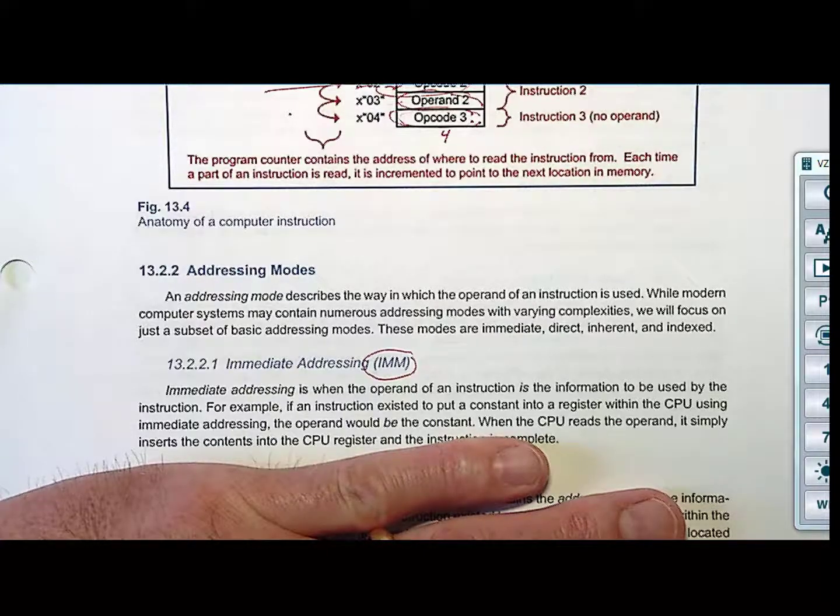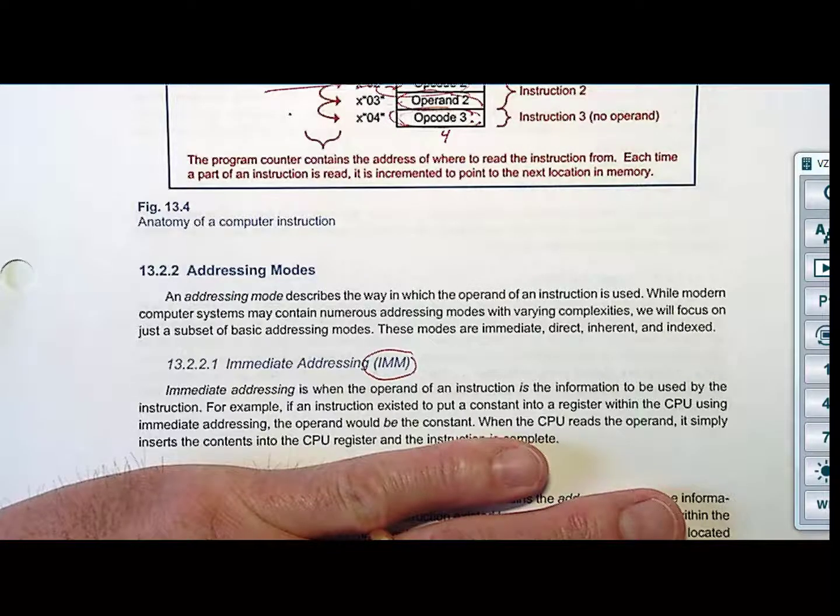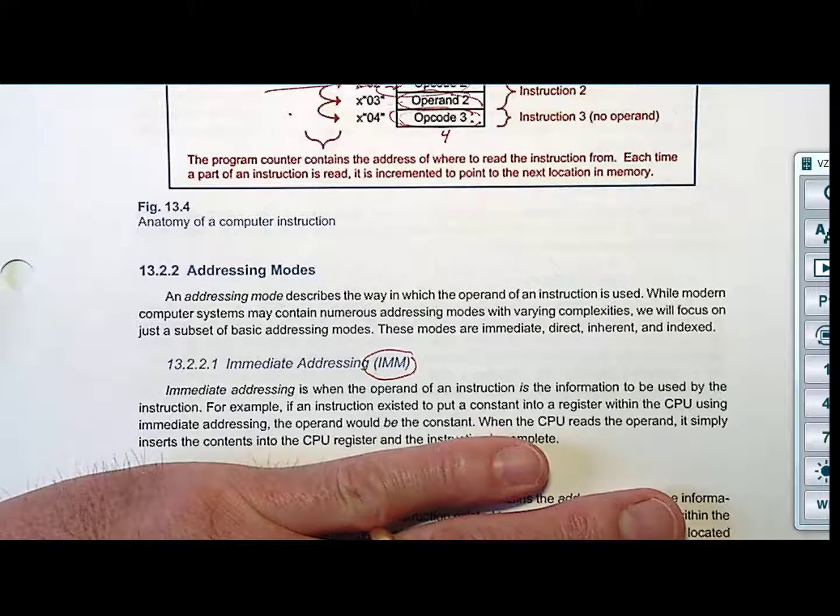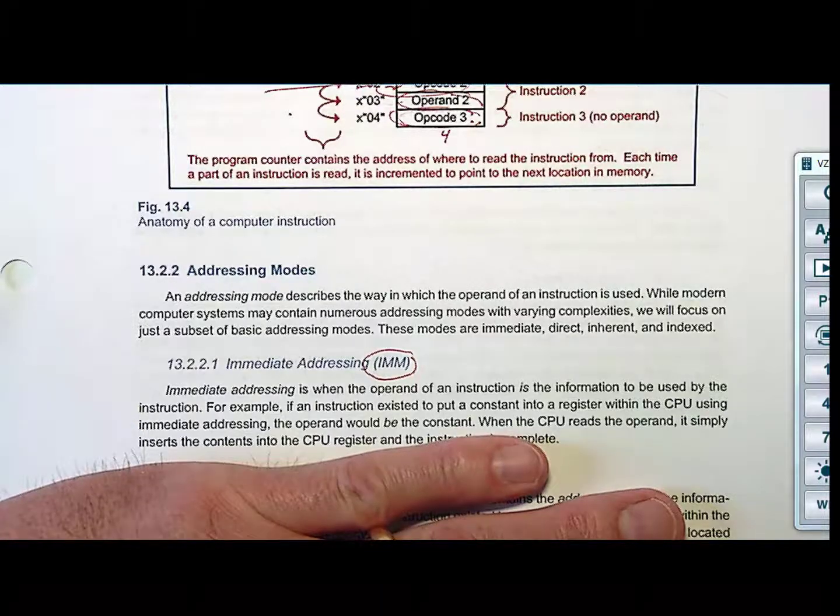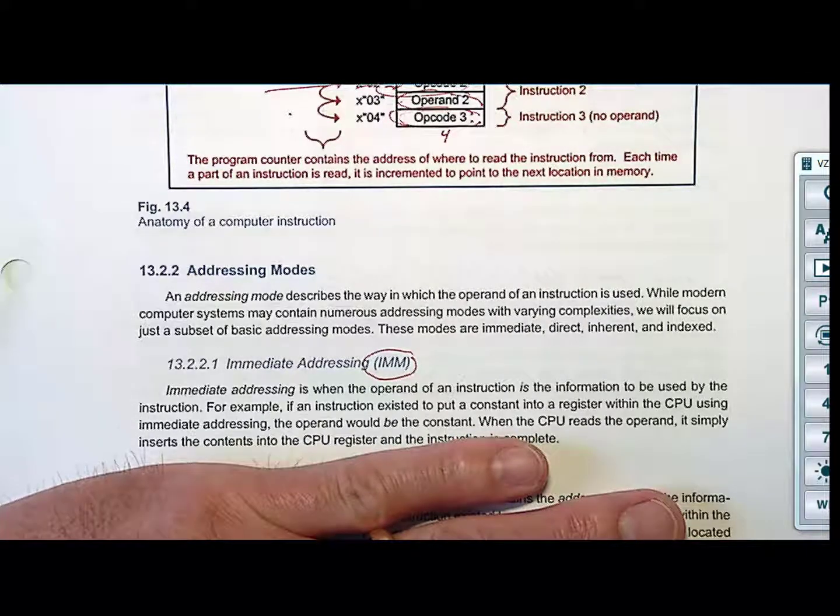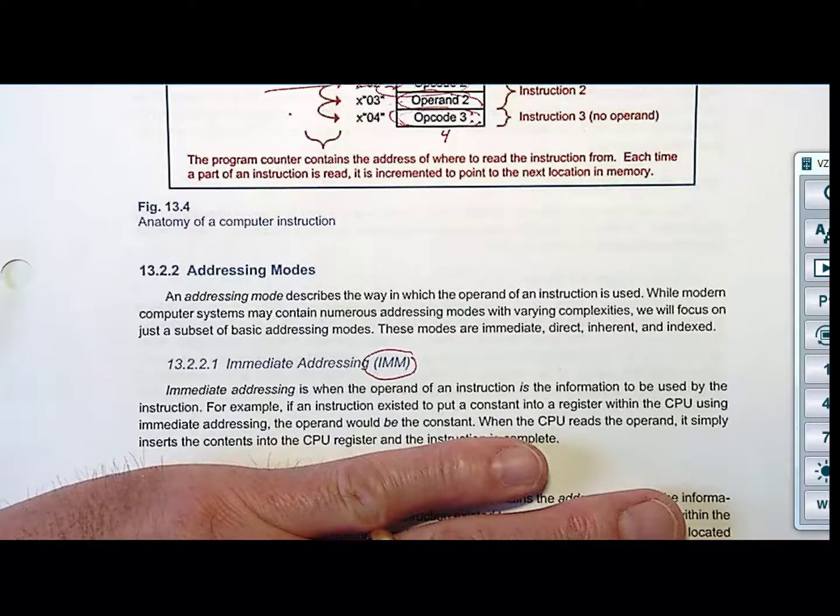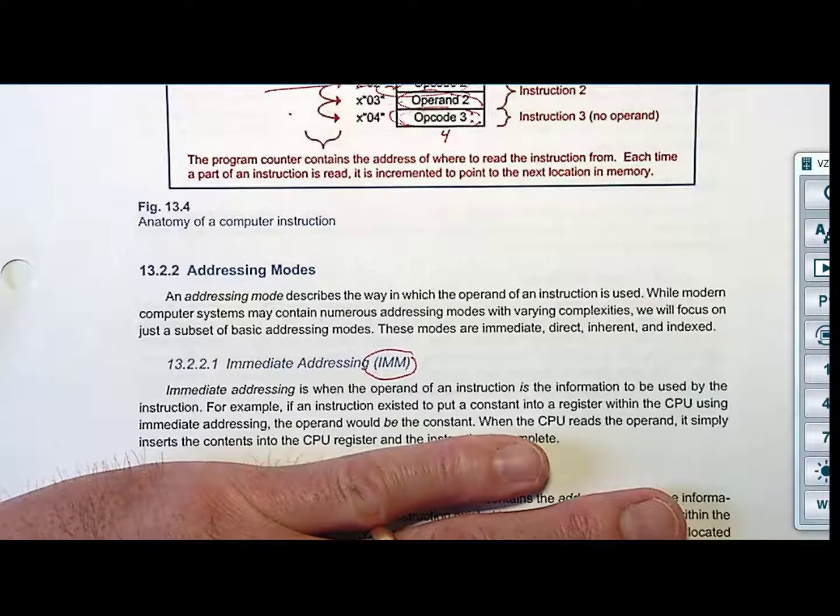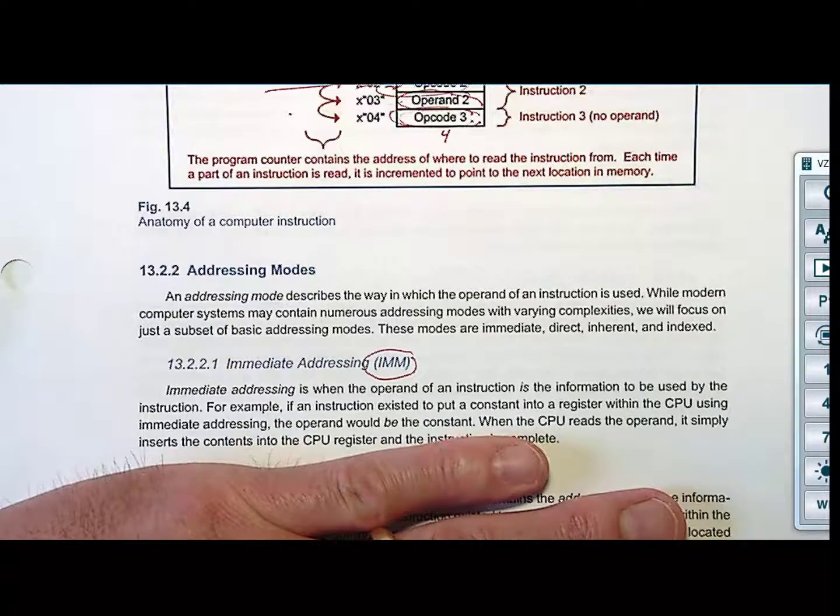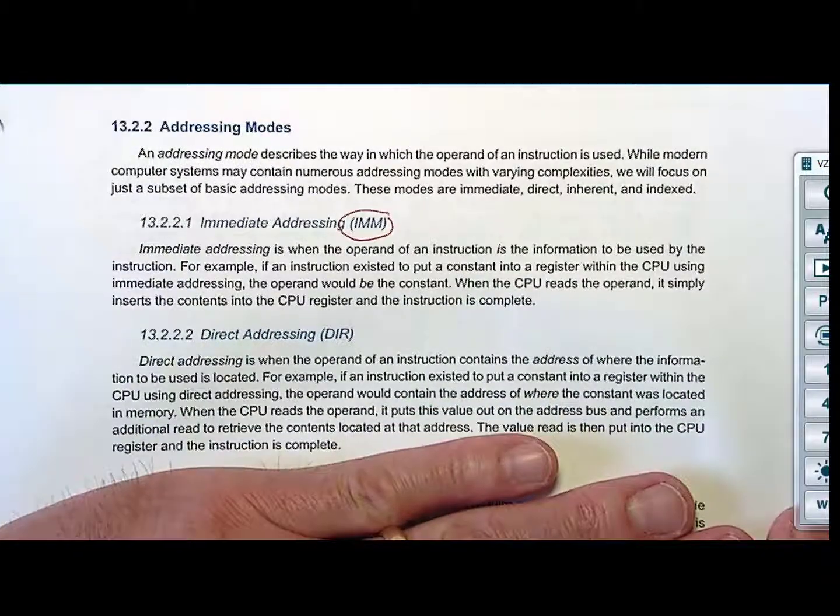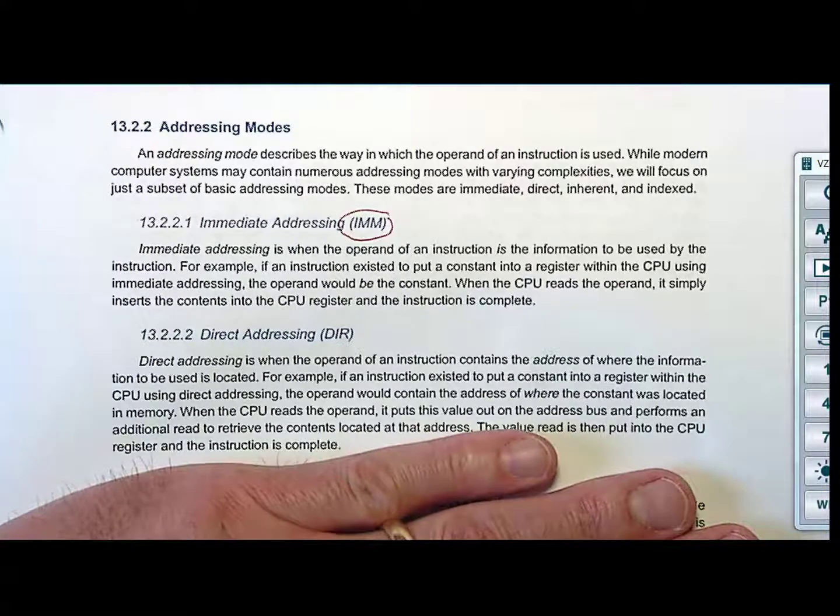This becomes important to think about what type of addressing it is when you build the finite state machine. Because if you know that instruction is using immediate addressing, then when you read the operand, you know what to do with it. Does that feel good? Now you go, what the hell? Why are you telling me this? What else could the operand ever be? It's either data or what? What's another thing that the operand could be? An address. Maybe the operand isn't the information to put into a register like A. Maybe the operand is an address of where the information might be.